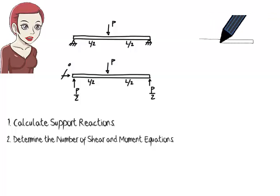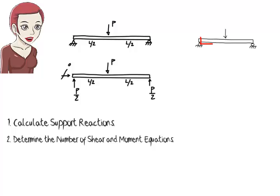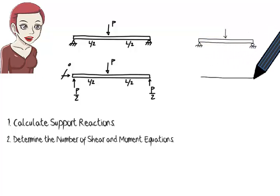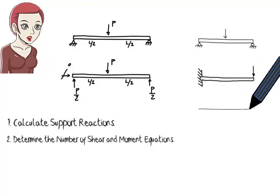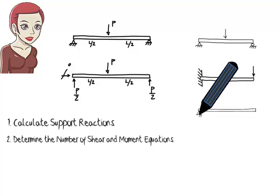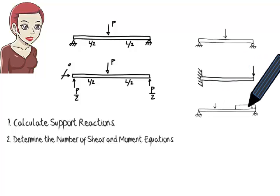Let's spend a few minutes examining several cases. How many pairs of shear and moment equations do we need for this beam? The load divides the beam into two segments. Therefore, we need two sets of equations: one set for the left segment, another set for the right segment. Here, the load does not divide the beam into multiple segments, as it is applied at the tip of the beam. Therefore, we only need one shear equation and one moment equation for the entire beam. Here, the loads divide the beam into three segments, so three pairs of shear and moment equations are needed.